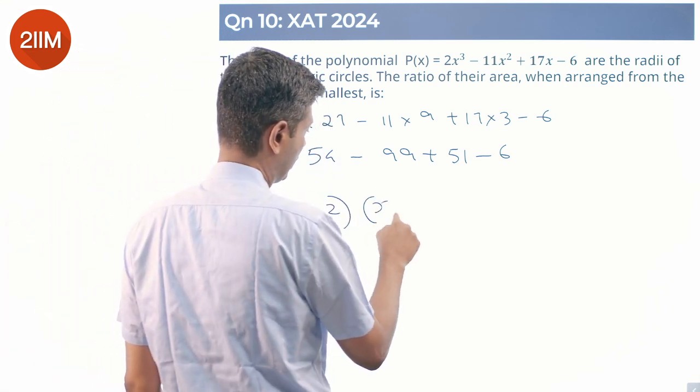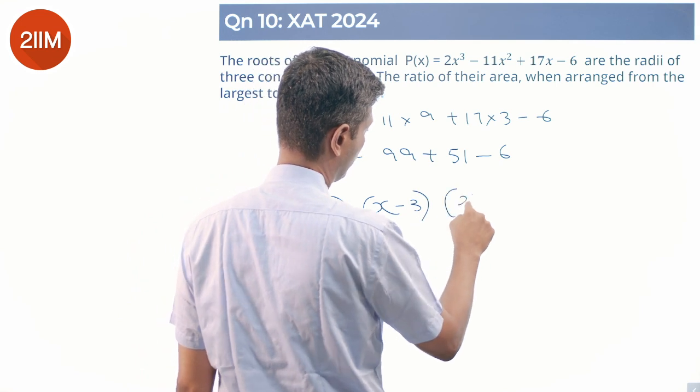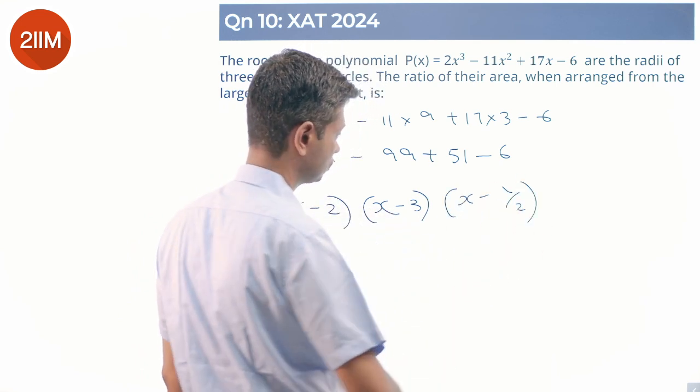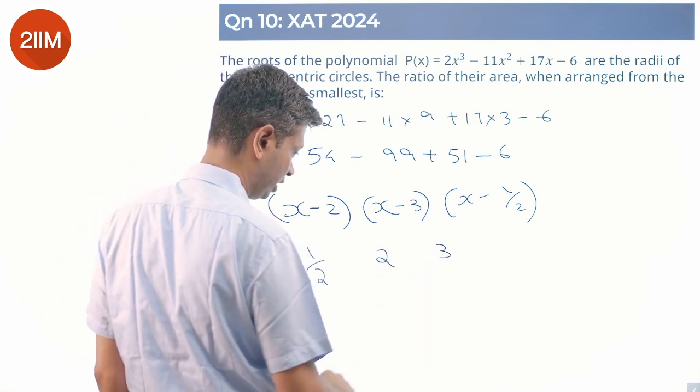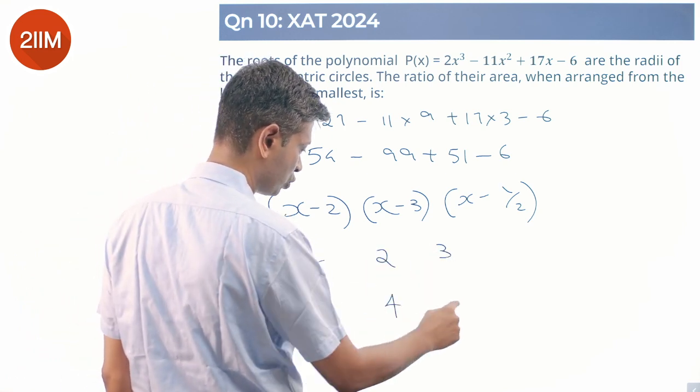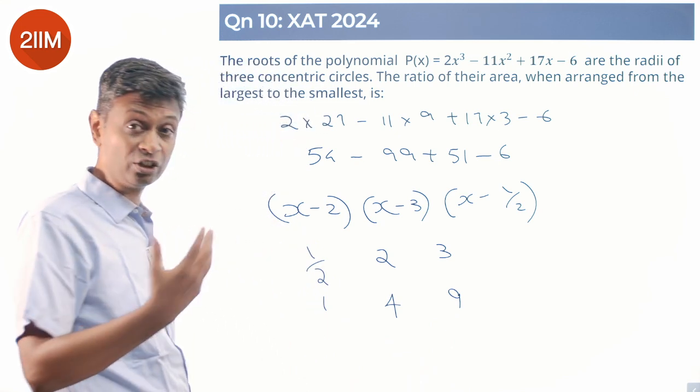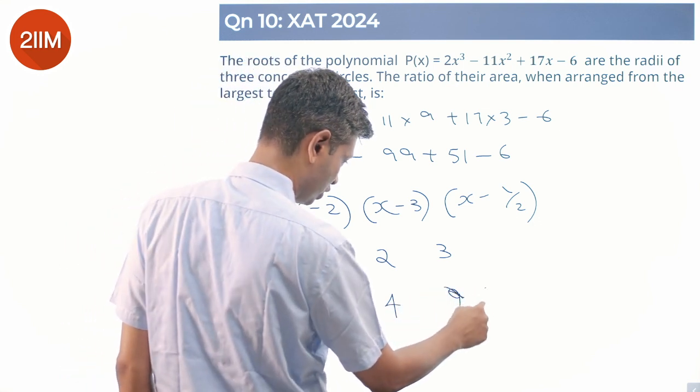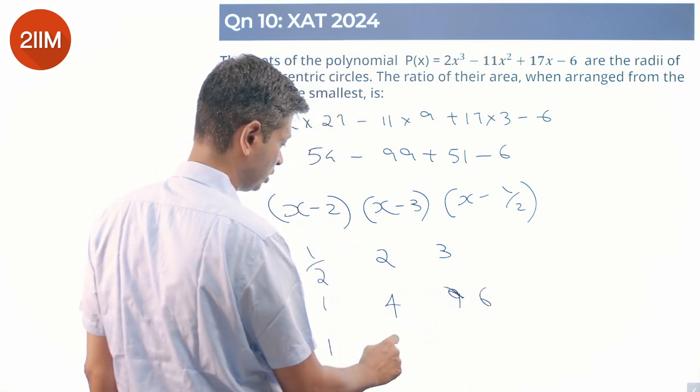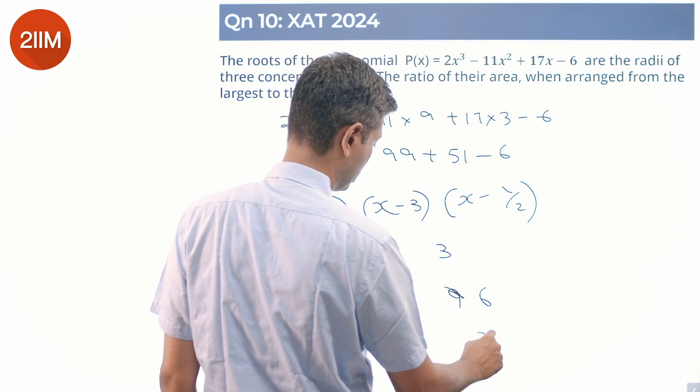So the concentric circles have radii 1/2, 2, and 3. Ratio 1:4:6. Areas when you square them: 1:16:36.